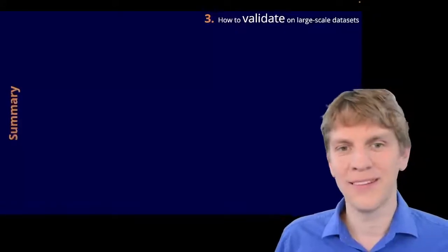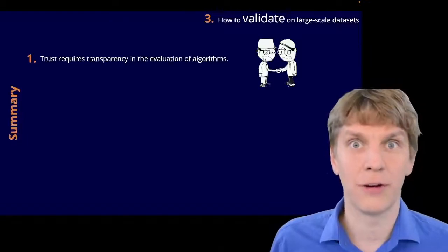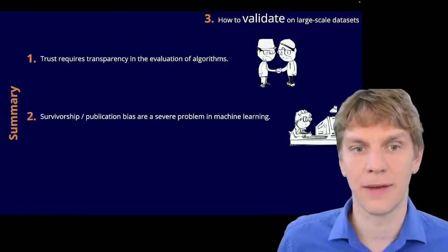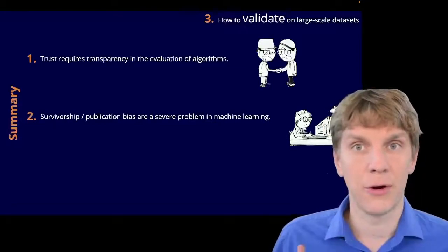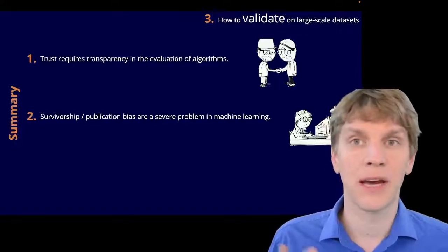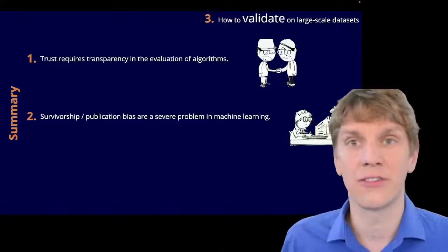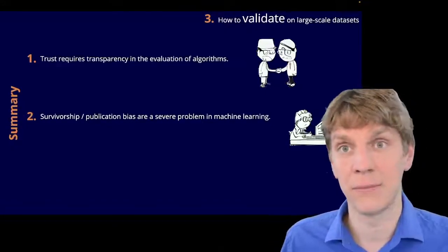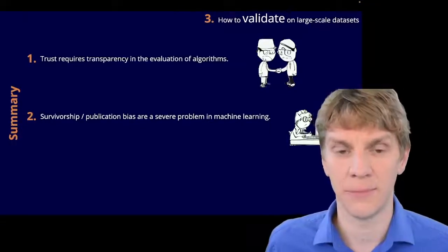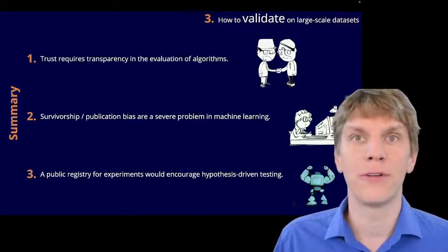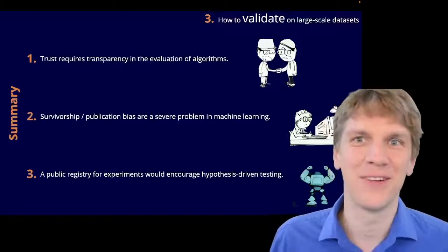All right, so let's summarize that third point also briefly. So, trust requires transparency in the evaluation of algorithms. I think this is a very clear thing. Further, the survivorship or publication bias is a severe problem at the moment in machine learning. There's every now and then papers claiming, yet we are, again, half a percentage point better. That doesn't mean that they are actually better on the task. That just means that they were actually better on the test set. And maybe they even had the test set in their own hands, so maybe it was just a hyperparameter tuning that they did. And third, like a public registry for those experiments in machine learning would encourage hypothesis-driven testing.